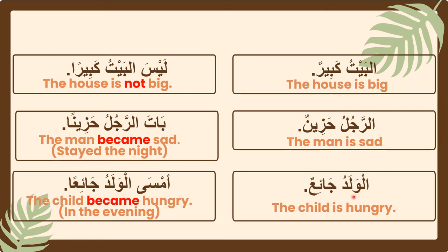Next: الولدُ جائعٌ — الولدُ is مُبْتَدَأ and جائعٌ is خَبَر. When كان وأخواتها enter the sentence, it changes from مُبْتَدَأ to إسمُ أمسى, and خَبَر to خَبَرُ أمسى. جائعٌ changes to جائعًا, because when كان وأخواتها enters the sentence, it changes from ضَمَّتَيْن to فَتْحَتَيْن.